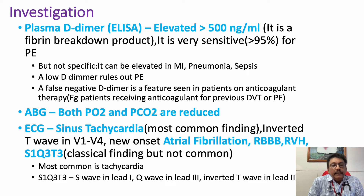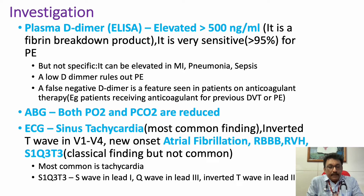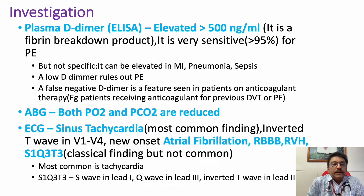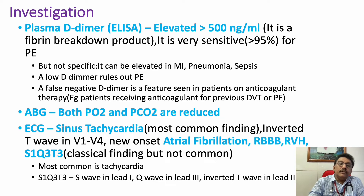ABG initially shows reduced pO2 with tachypnea. In massive pulmonary embolism, pCO2 may also be elevated, and initially both gases can be reduced. Initially it is mainly type 1 respiratory failure. ECG normally shows sinus tachycardia, but the classical finding is S1Q3T3 — deep S waves in lead 1, Q wave in lead 3, and T-wave inversion in lead 3 — though this is not present in all patients. Other ECG findings include RBBB, right bundle branch block, and atrial fibrillation.